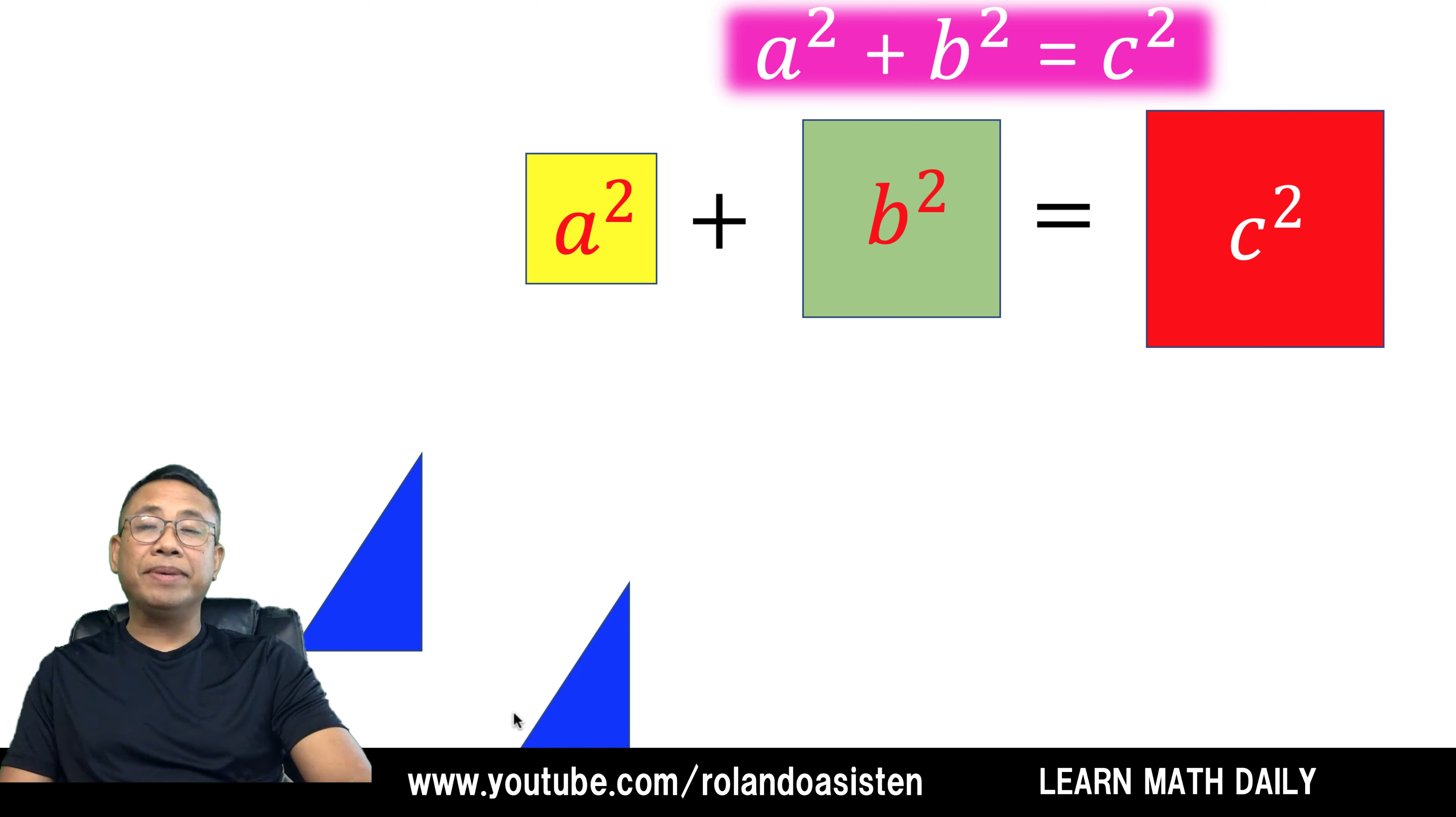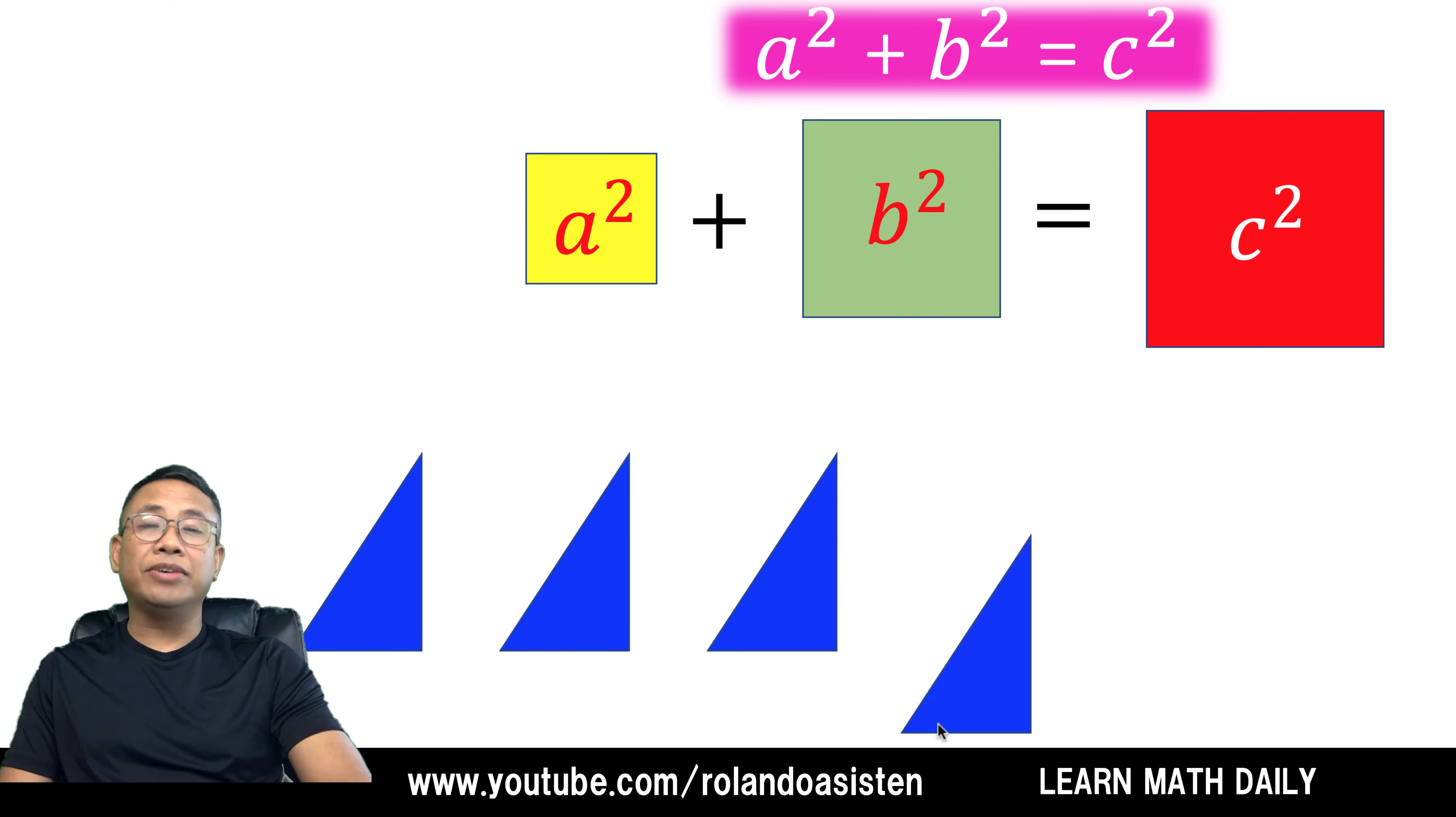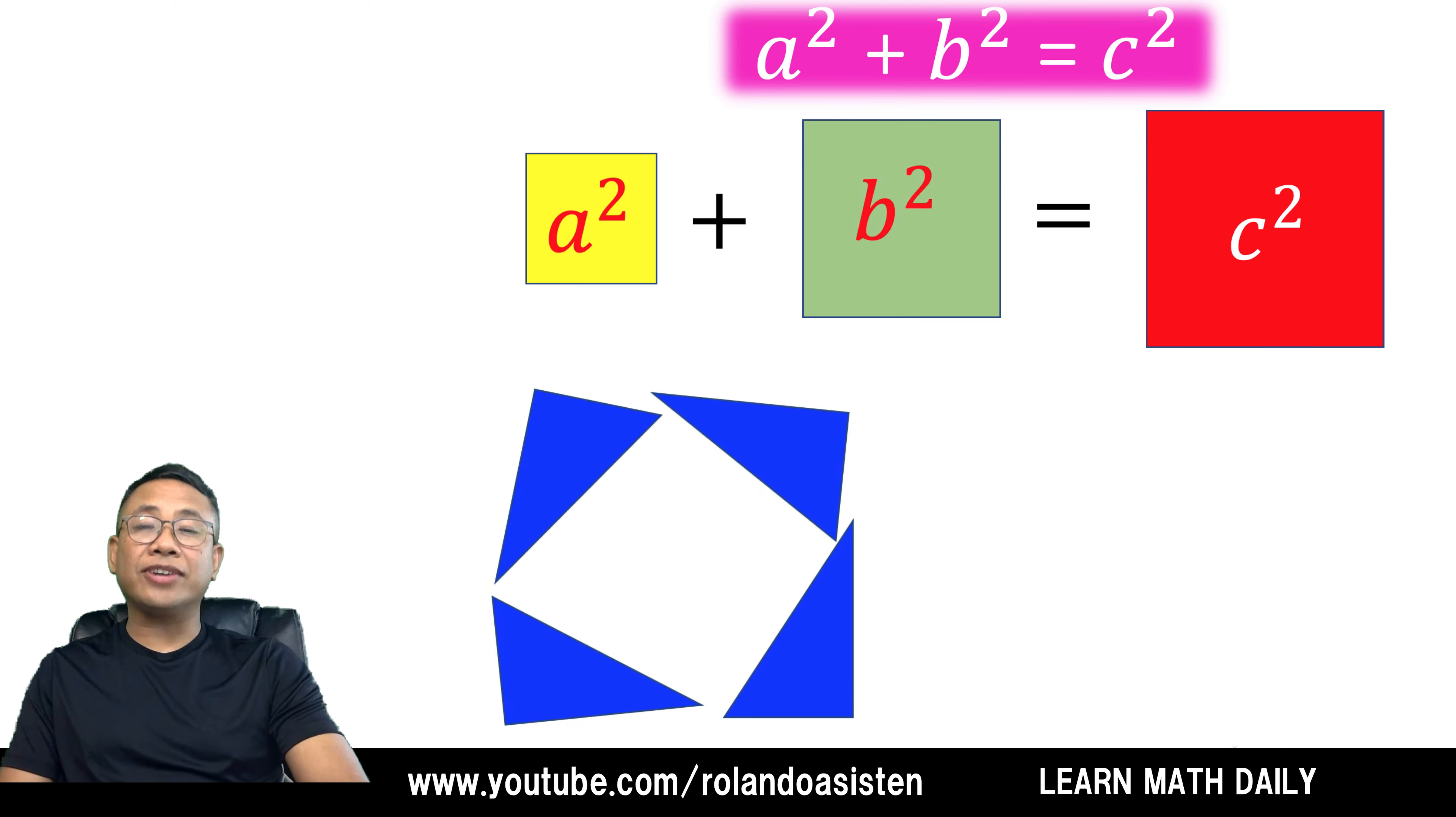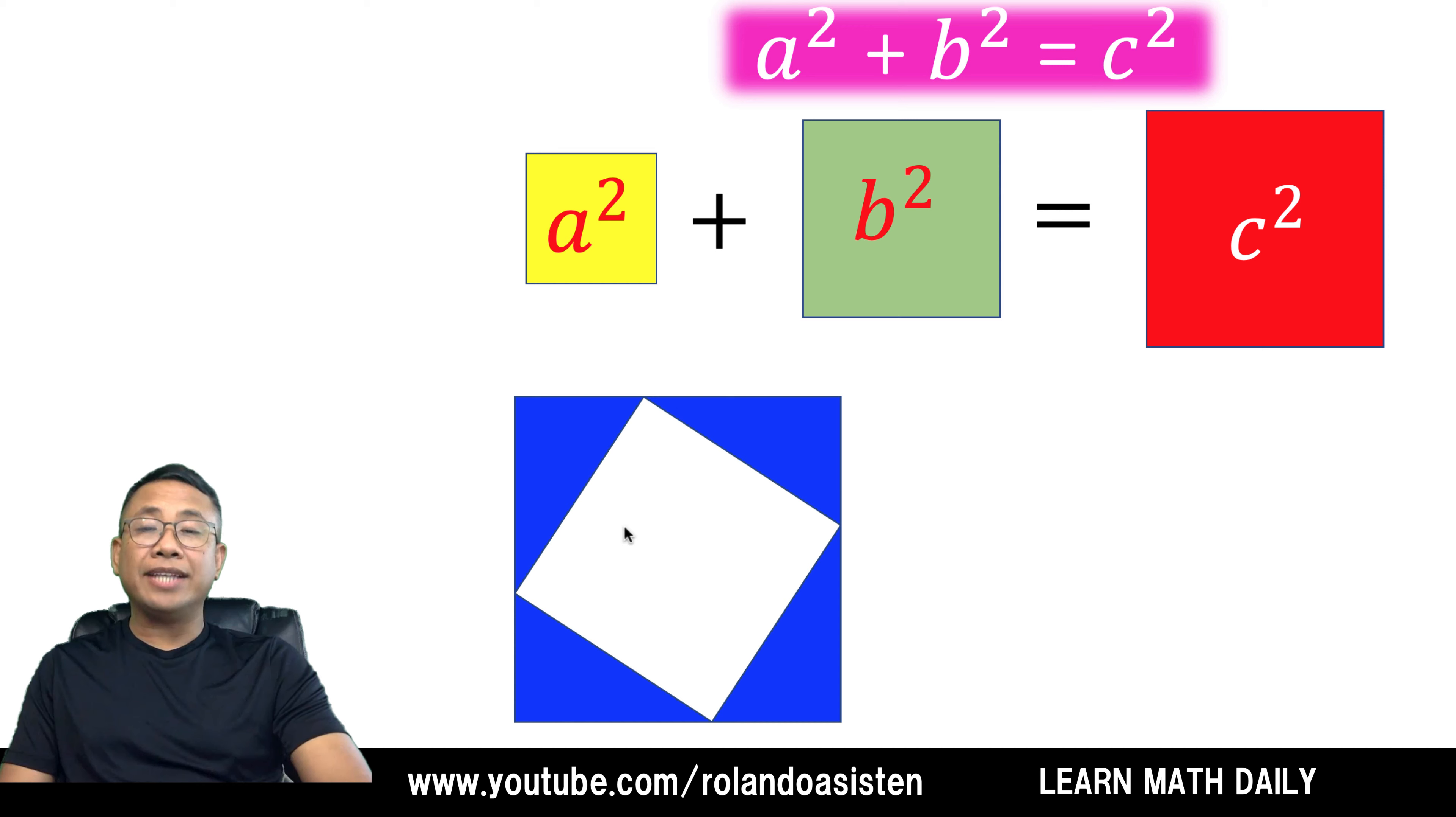Let's start by making copies of the original blue right triangle, four of them. Then let's rearrange these four right triangles in order to form this shape. We form here a square with a hole inside, and the shape of the hole is another square.